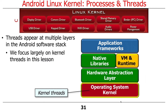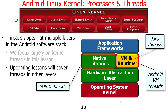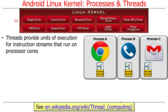We're mostly going to focus on kernel threads here. A thread provides a unit of execution for instruction streams that run on processor cores — the thread is ultimately the thing that's going to be running instructions. How do you give a thread something to do in Java? How does execution begin?